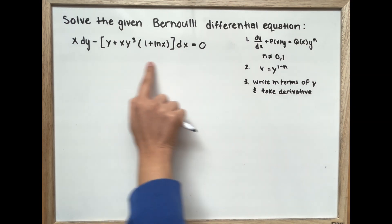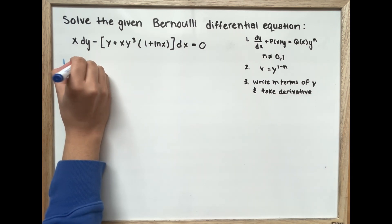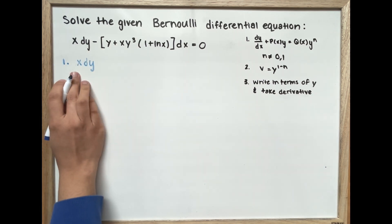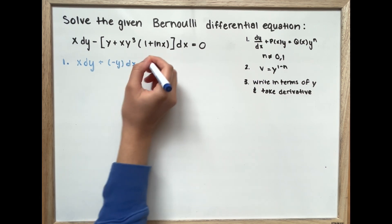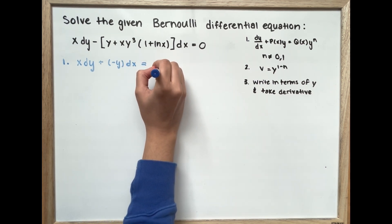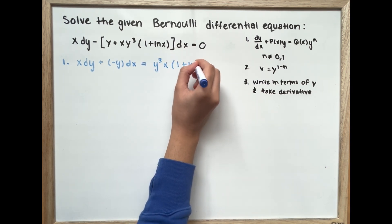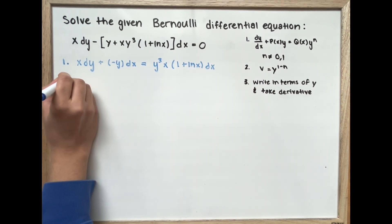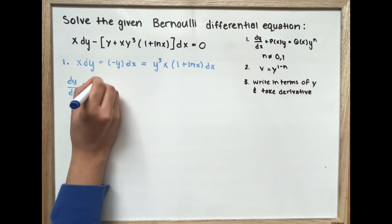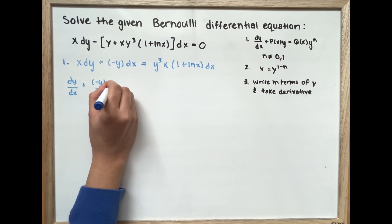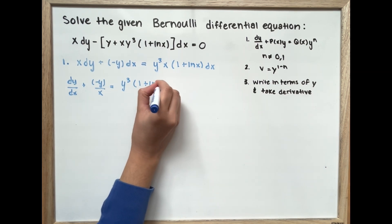First we're going to write our equation into standard form. We have dy multiplied by x plus negative y dx, which is equal to y cubed times x times (1 plus ln of x) dx. We can simplify this further to get dy over dx plus negative y over x, which is equal to y cubed times (1 plus ln x).